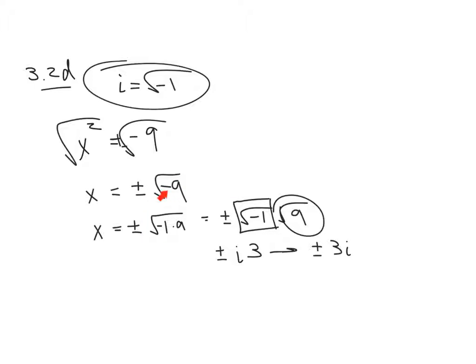Take the negative off, turn it into an i, and put it either at the beginning or the end of the radical. So it can either be i square root of 9 or the square root of 9i, depends on what book. Then you can take the square root, and you get 3i, and that's plus or minus sign is from that right there.